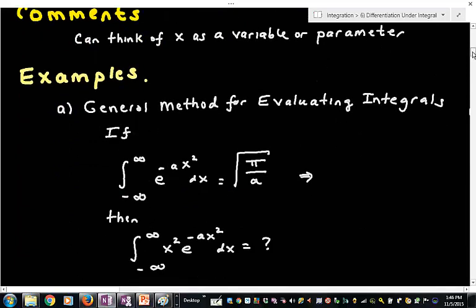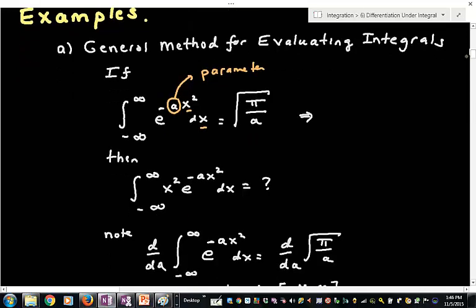So first I'm going to look at this in the case where I'm thinking of this second variable as being really a parameter. So notice that I'm doing the integration with respect to x, and I'm thinking of a as a parameter here. And I claim that I know what this integral is. And in fact, we're going to evaluate this for a homework problem. You're going to see exactly what it is. We're going to actually prove this. If I know this is true, then I could ask the question, well, what is this integral where now I have x squared?